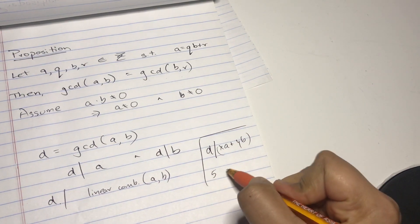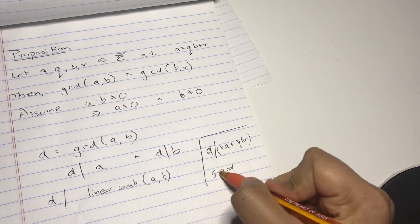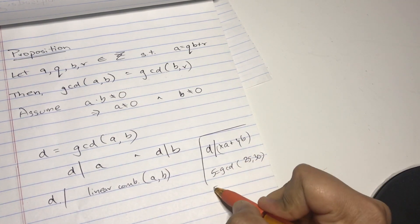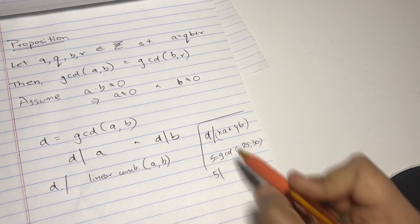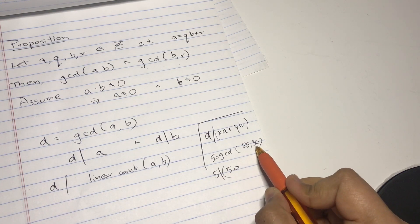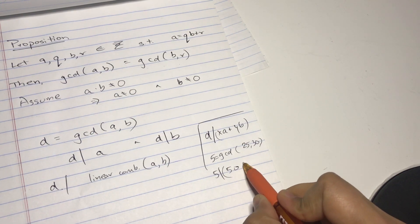I'm just going to take an example real quick. Let's say 5 is the gcd of 25 and 30, right? So 5 has to divide any linear combination. Let's say 2 times 25 is 50, 2 times, let's say 3 times 30 equals 90.